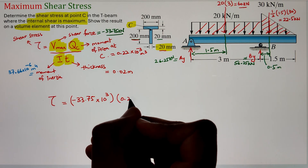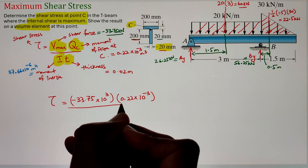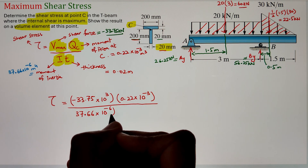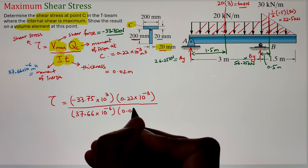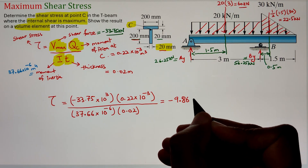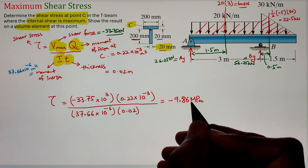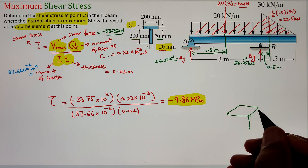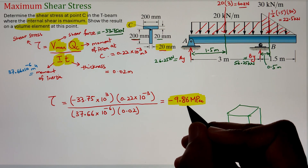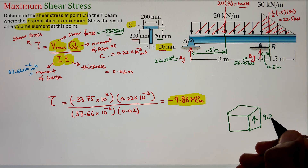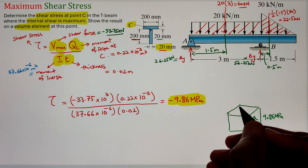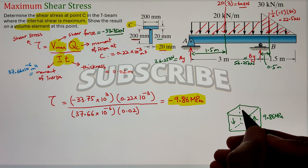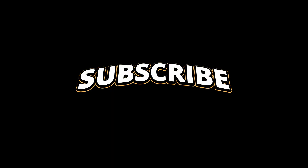Substituting into τ = V_max · Q_C / (I · t): V_max = 33.75 × 10³ N, Q_C = 0.22 × 10⁻³ m³, I = 37.66 × 10⁻⁶ m⁴, t = 0.02 m. This gives τ = −9.86 MPa. The negative sign indicates direction. On the volume element, the right face has shear acting upward at 9.86 MPa and the left face downward. Since these create a counterclockwise moment, the top and bottom faces carry complementary shear stresses in the opposite sense to maintain equilibrium.